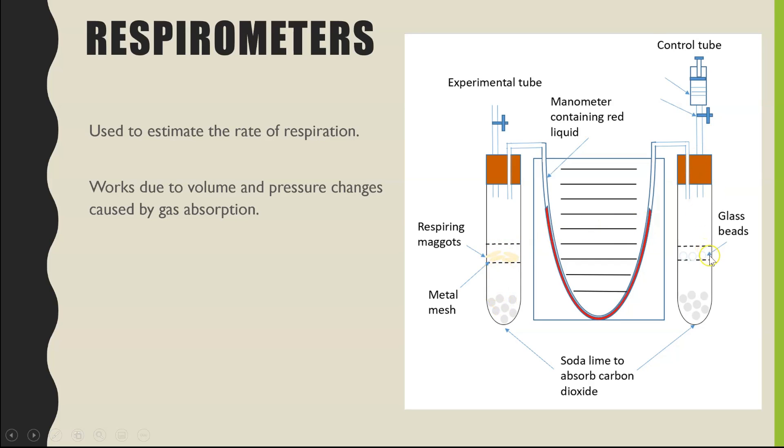Our control tube exactly the same, except if we want to prove that it's definitely the organism that is respiring and nothing else causing the changes, then we need to put an inert object. So we've got glass beads here as an example because they won't be respiring, but you'd put the same mass of glass beads in as maggots just to keep everything consistent.